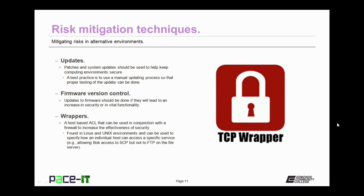Updates are another risk mitigation technique. Patches and system updates should be used to help keep computing environments secure. A best practice is to use a manual updating process so that proper testing of the updates can be done before they're placed into a production environment. Firmware version control should also be implemented — updates to firmware should be done if it will lead to an increase in security or vital functionality.